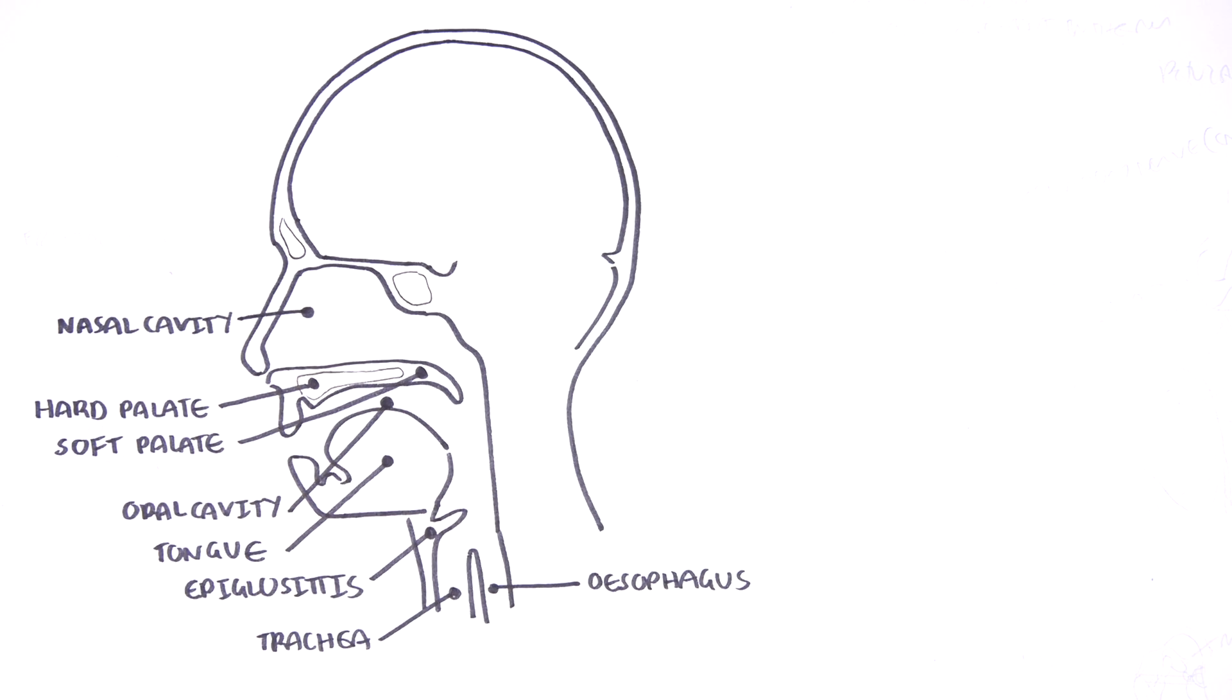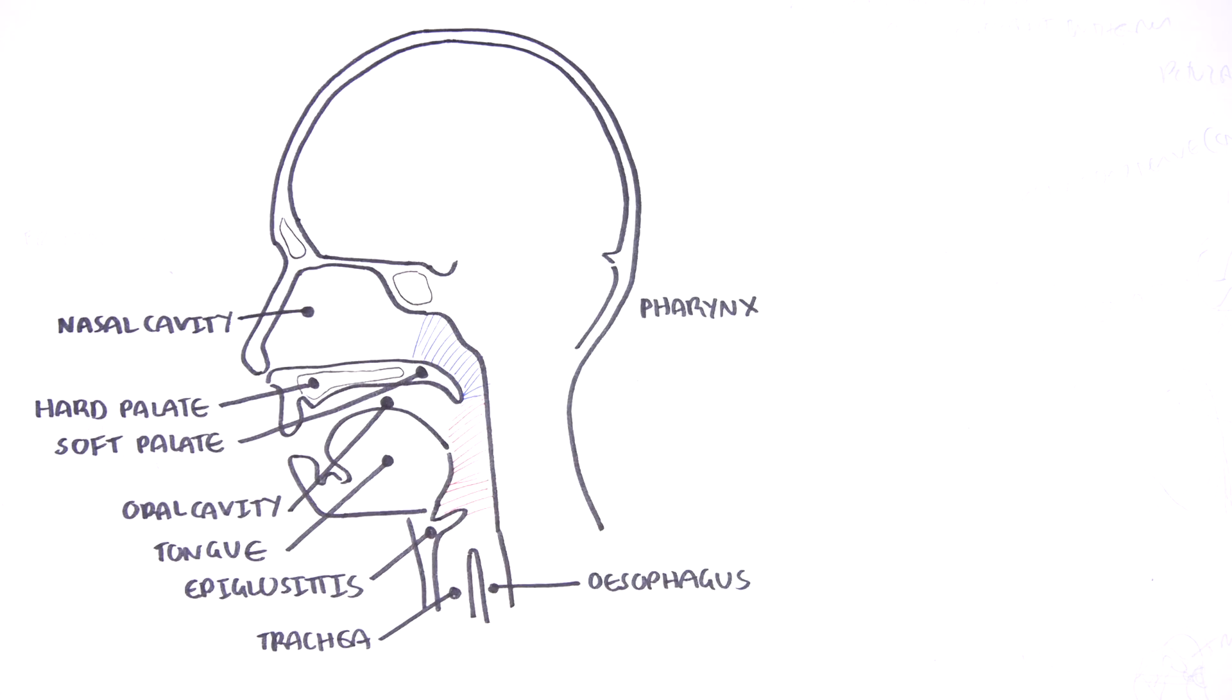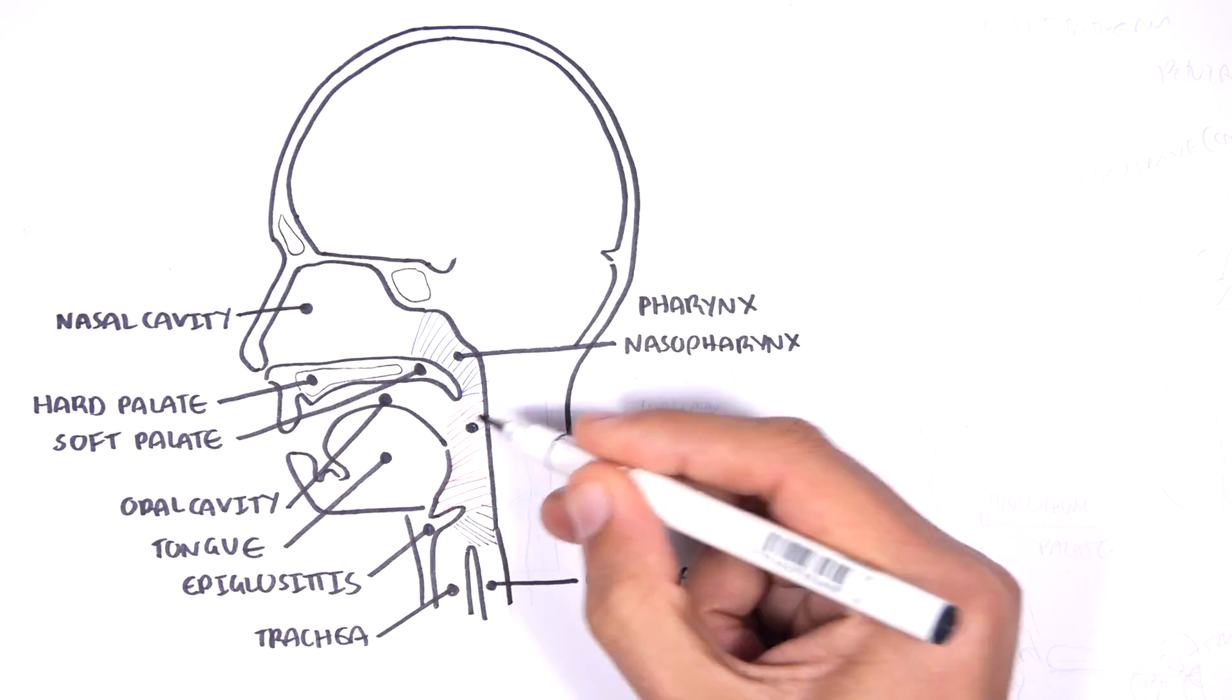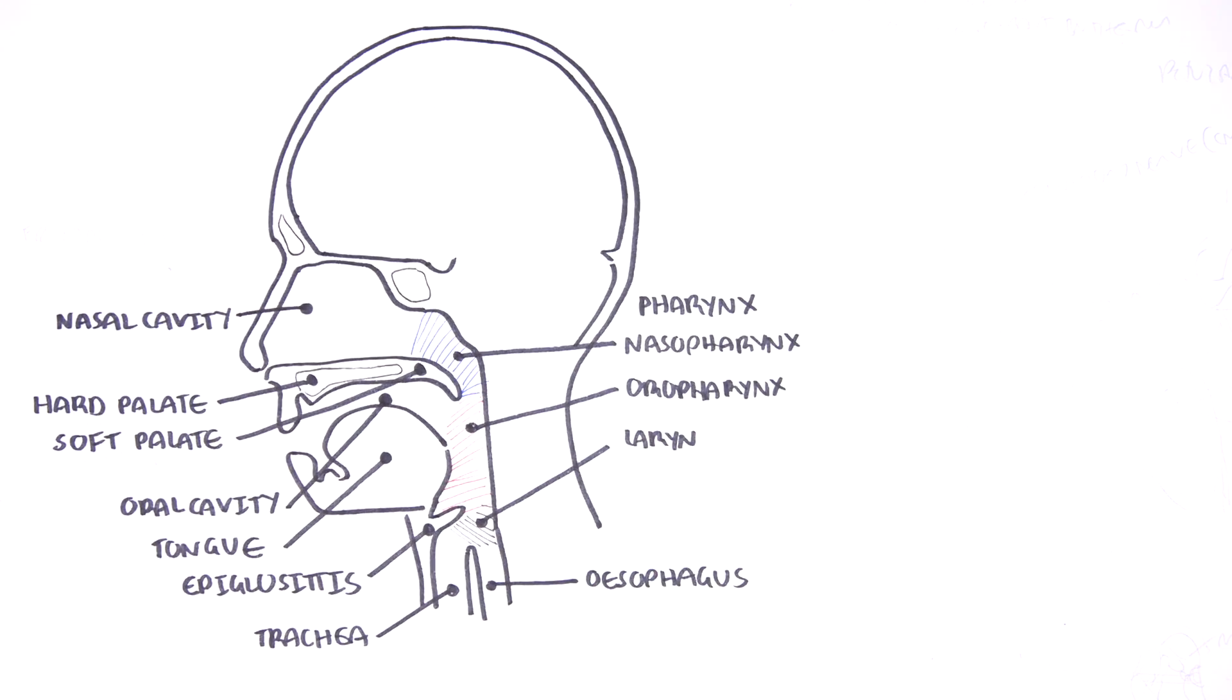The throat, or the pharynx, can be divided into three parts. The very top is the nasopharynx, which is in line with the nasal cavity. The middle is the oropharynx, which is in line with the oral cavity. And the bottom is the laryngopharynx, where we have the larynx essentially.